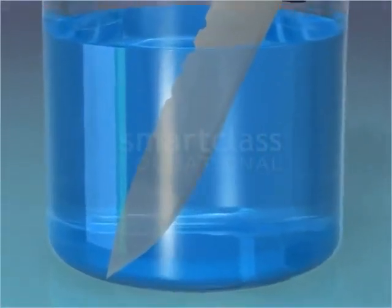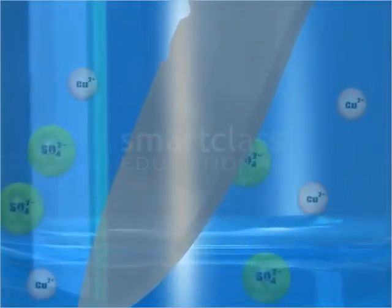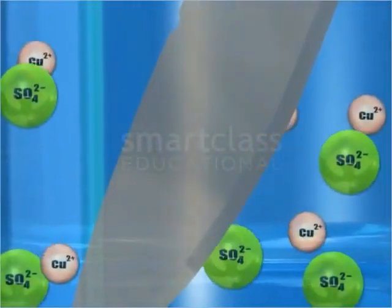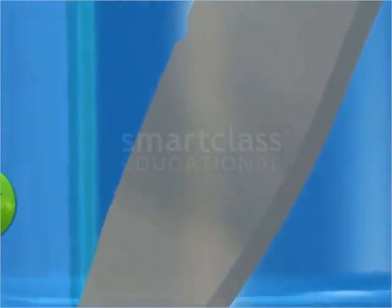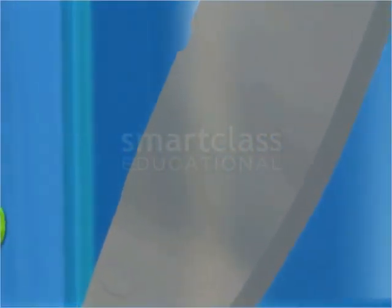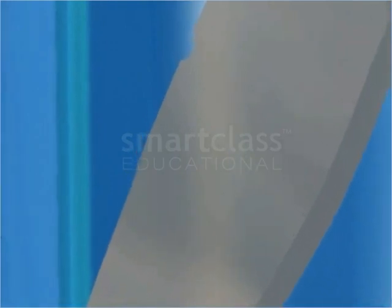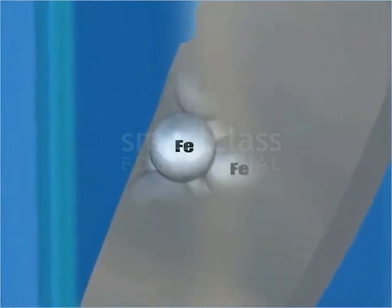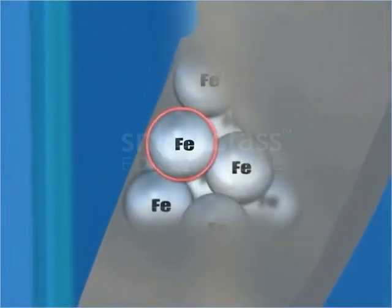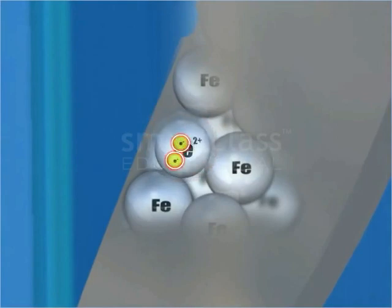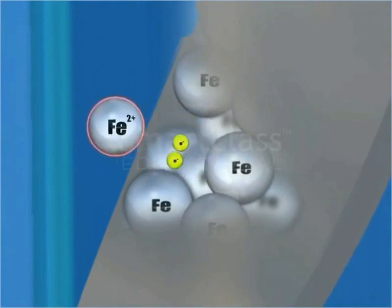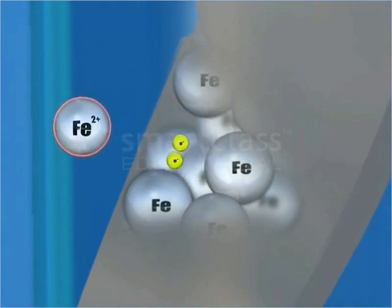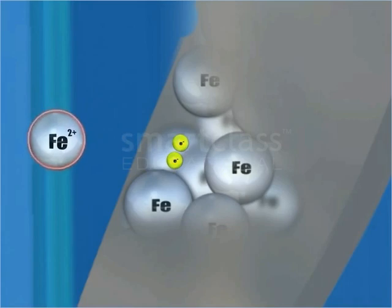It happens because some of the iron of the knife dissolves in the solution by ionizing. During ionization, an iron atom loses two electrons and forms ferrous ions. The ferrous ions so formed move freely in the solution.